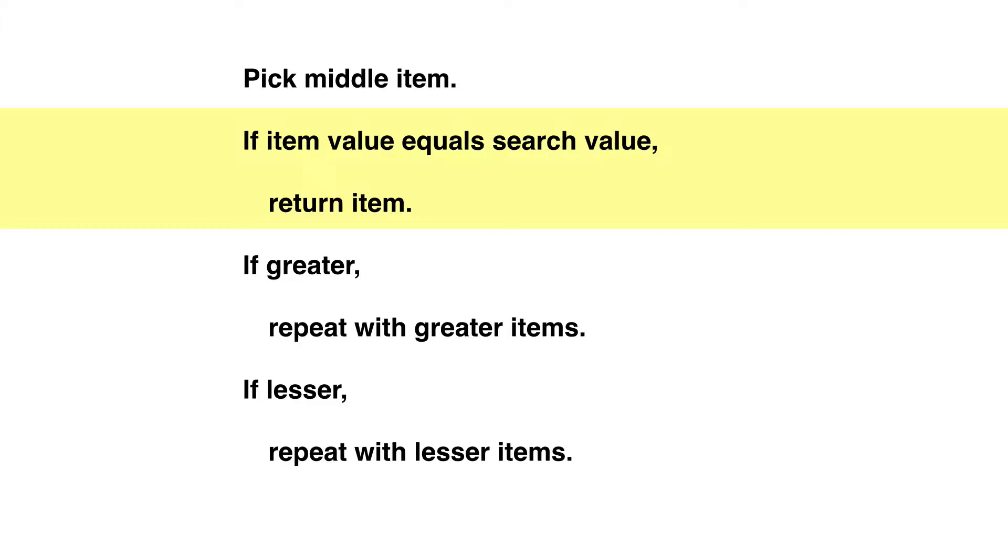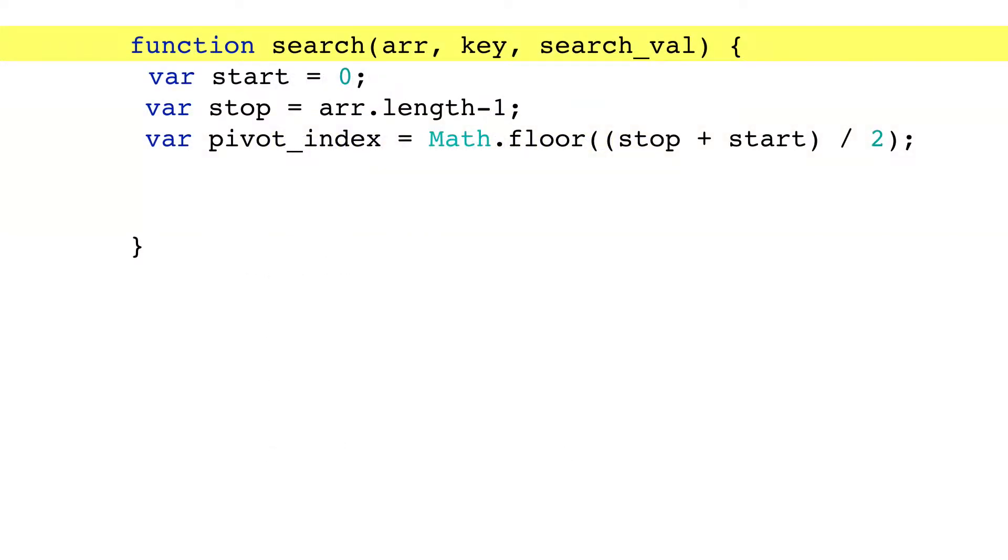We have a pivot. Now let's check for a match. First, we need some search parameters. The key is the property that objects in the array are sorted on, often a property like id. The search value, on the other hand, is the value we've been searching for, like id equals 23.